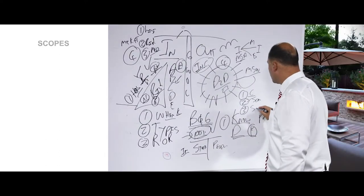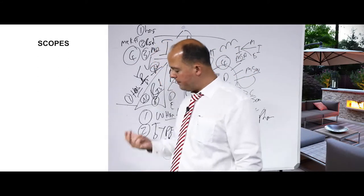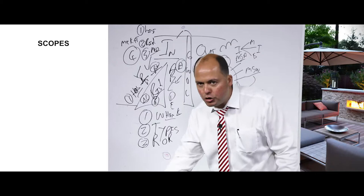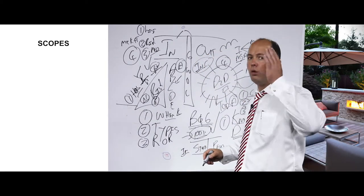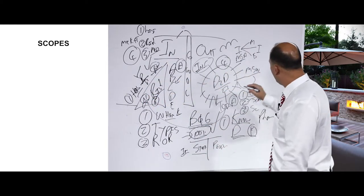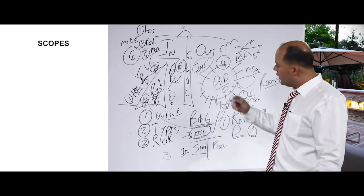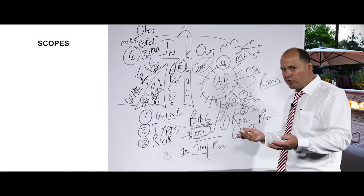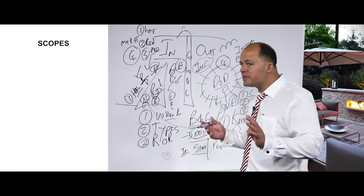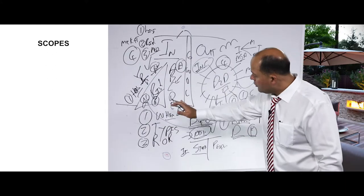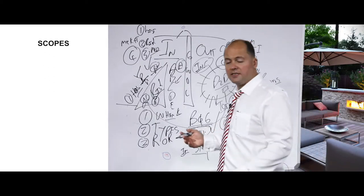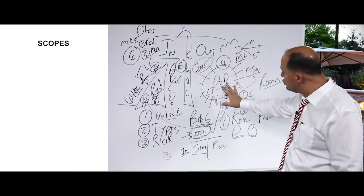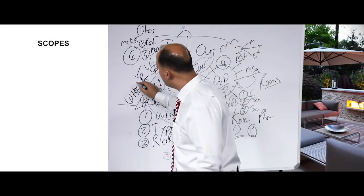Number three: scopes — colonoscopy, gastroscope; two from the top, two from the bottom. If they can do it from the top and the doctor has the equipment in his rooms, they just need to phone for authorization, and the whole thing will be paid from the in-hospital benefit even though it's done in the doctor's rooms. If it's from the bottom and you go to a hospital, then a certain amount of the scope will be paid from your day-to-day care benefits and the balance from the hospital benefit.